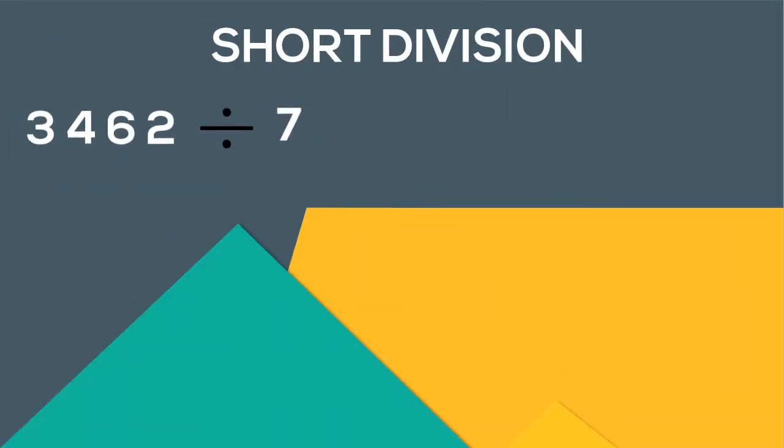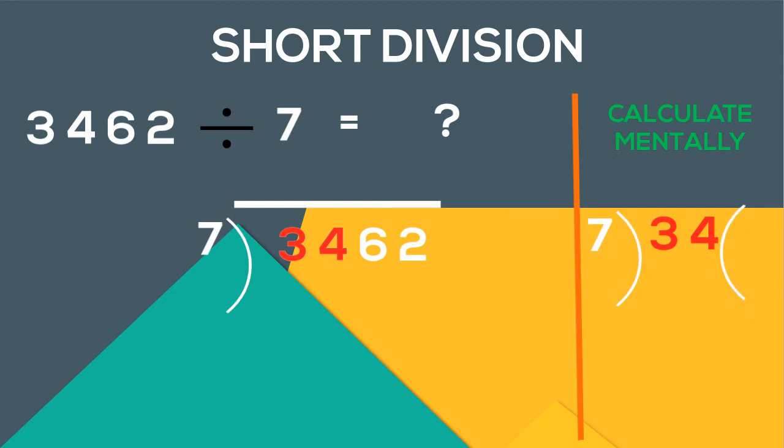Our second example: 3462 divided by 7. First we will consider 34. 7 goes 4 times in 34 with the remainder of 6. So 4 goes up and 6 at the bottom.